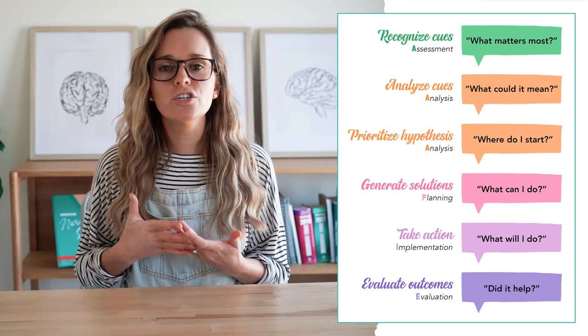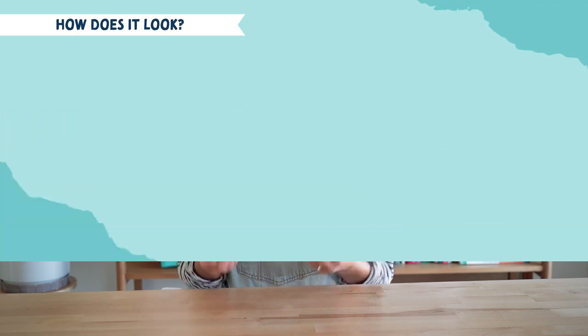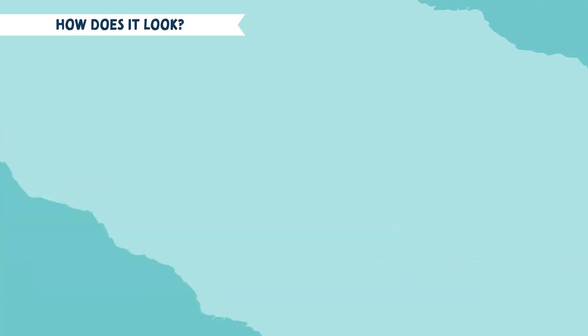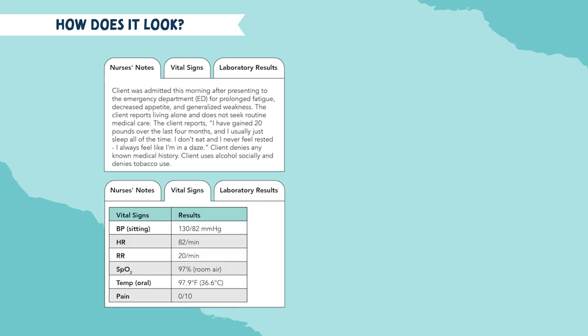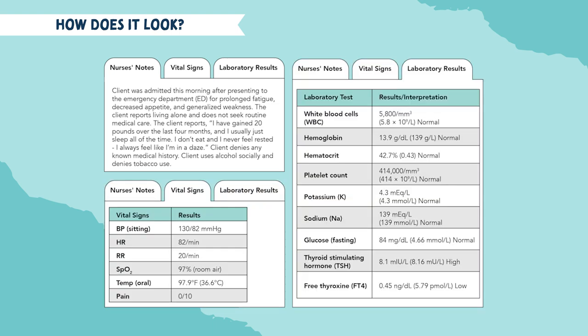The first thing to notice with Bowtie Questions is the information you are given about the client and the situation that's going on. As an example, you might be given things like nurses notes, vital signs, or laboratory results. You will see these as different tabs, and you might be given one or multiple tabs.